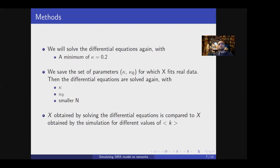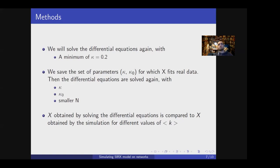In a recent paper by Brockmann, these differential equations were solved for several provinces of China, with alpha and beta constant — rates governing the transmission and recovery of the infection — and a set of changing parameters Kappa and Kappa_0. These parameters change until the best fit of X to the confirmed cases is found. In our work, we compare differential equations to simulation. We set a minimum mean Kappa of 0.2, as without this constraint the average K for which the simulation fits the differential equations is unreasonably high. We solve the differential equations for several countries, find the parameters for which X fits real data, and then lower the population to compare differential equations to computationally costly simulation.